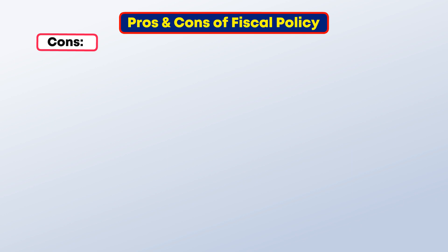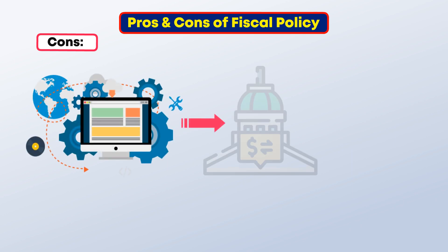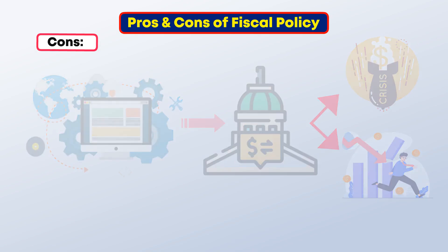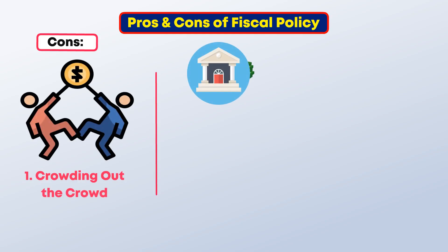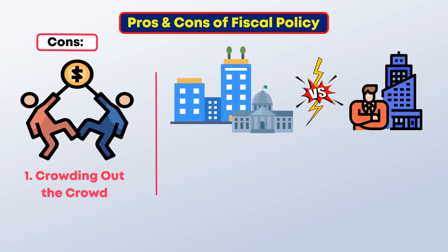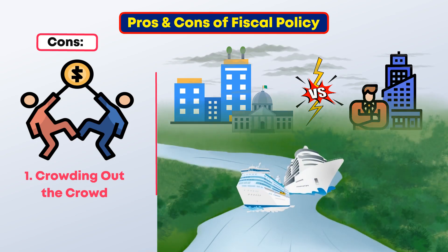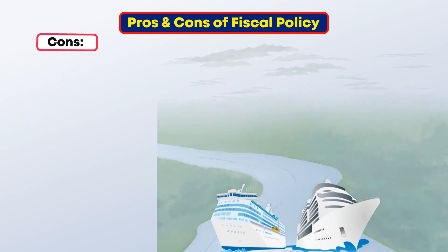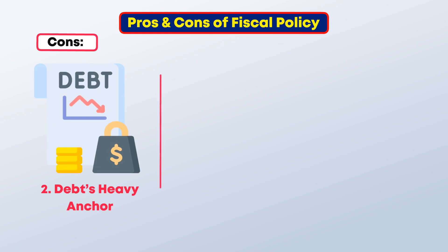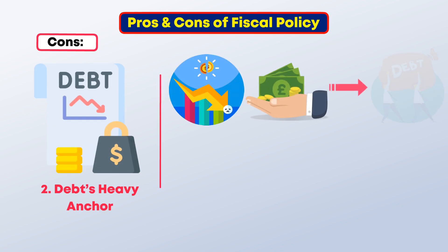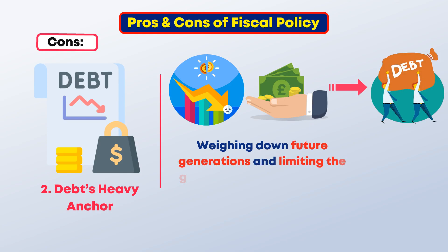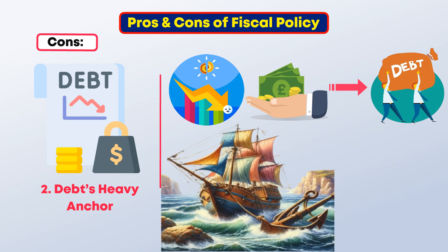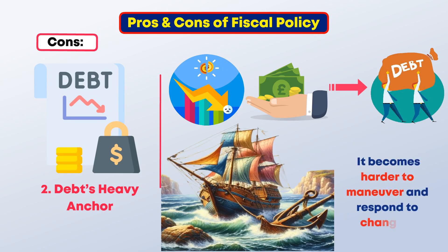Second, the cons. Like any powerful tool, fiscal policy comes with its own set of challenges. One, crowding out: when governments spend too much, they can compete with private businesses for resources — like two ships trying to navigate the same narrow channel, causing congestion and slowing everyone down. Two, debt as a heavy anchor: persistent deficits and borrowing can pile up a mountain of debt, weighing down future generations and limiting the government's ability to act in times of crisis.